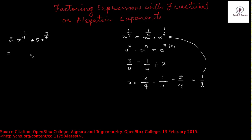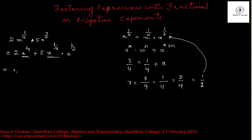So I can write the original expression 2x raised to the power 1/4 plus 5x raised to the power 3/4 — rewriting the second term as x raised to the power 1/4 into x raised to the power 1/2. Now you have a common factor: the greatest common factor is x raised to the power 1/4. You can take that out and write this as x raised to the power 1/4 into 2 plus 5x raised to the power 1/2. And that is how you factor an expression with a fractional exponent.